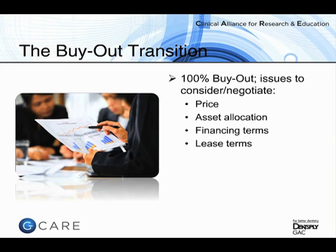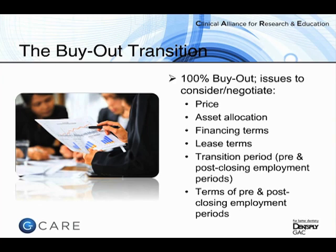Another thing to think about is transition periods — pre- and post-closing employment for both buyer and seller. Some buyouts have the buyer purchasing immediately and the seller working back for a period; others have the buyer working 12 to 24 months before buying the practice. The key is to negotiate this upfront. If your goal is to own a practice sooner rather than later, and the seller wants a four-year employment period before you can buy, that needs to be discussed and agreed to in writing before you step foot in the practice.